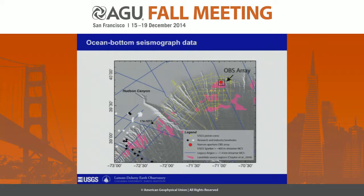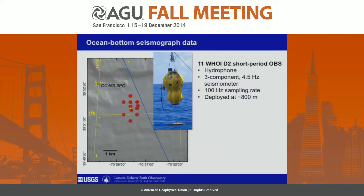Our site is to the northeast of Hudson Canyon, which is offshore of New York and New Jersey. We put out 11 short-period ocean bottom seismometers in a very tight array — this is one kilometer, so the maximum offset is about two kilometers. These are short-period instruments, so they're sensitive to higher frequencies than instruments used to record global seismicity. They had three-component seismometers plus a hydrophone.